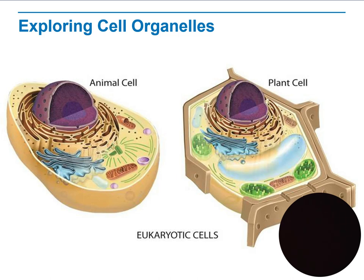If the endoplasmic reticulum does not have ribosomes on its external surface, then it is called the smooth endoplasmic reticulum. We will talk about the process of producing protein — going out from the nucleus to the cytoplasm, from the cytoplasm to the smooth endoplasmic reticulum, then to the rough endoplasmic reticulum, after that the Golgi apparatus, and finally out of the cell membrane.